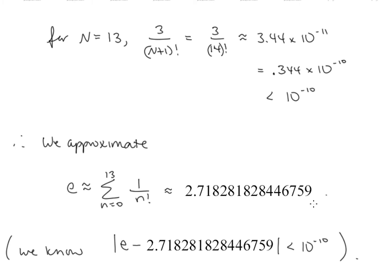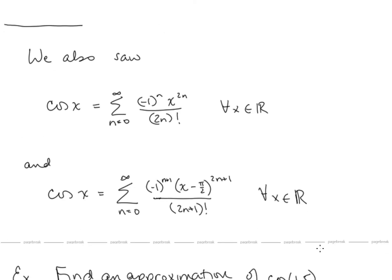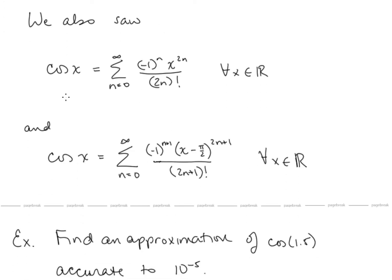Using that Taylor polynomial with n equals 13, this is the decimal we get. Accuracy of 10 to the negative 10 means the difference between the actual value for e and our approximation, in absolute value, is less than 10 to the negative 10. We also saw in the last lesson that cosine x can be expressed in two series: one centered at pi over 2, and the Maclaurin series centered at x equals 0. Both series converge to cosine x, so Taylor polynomials for either can be used to approximate cosine values.